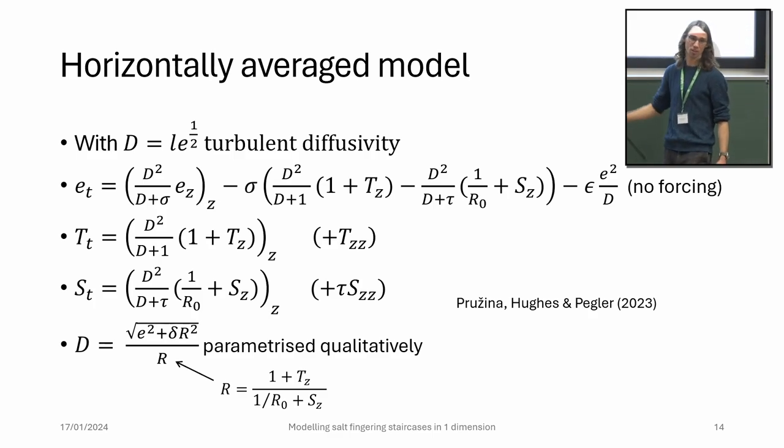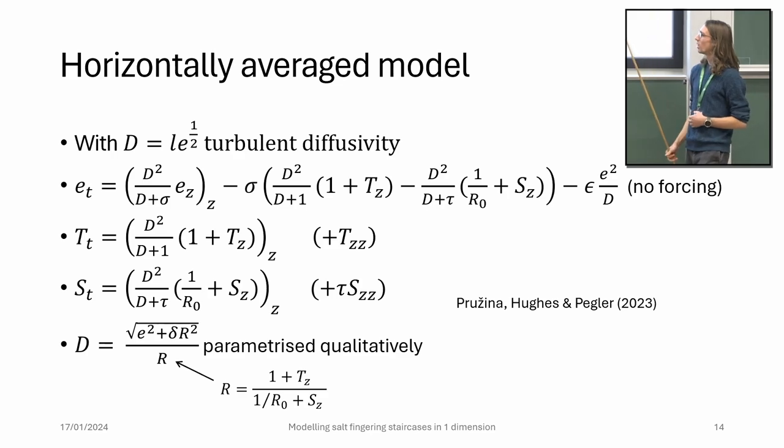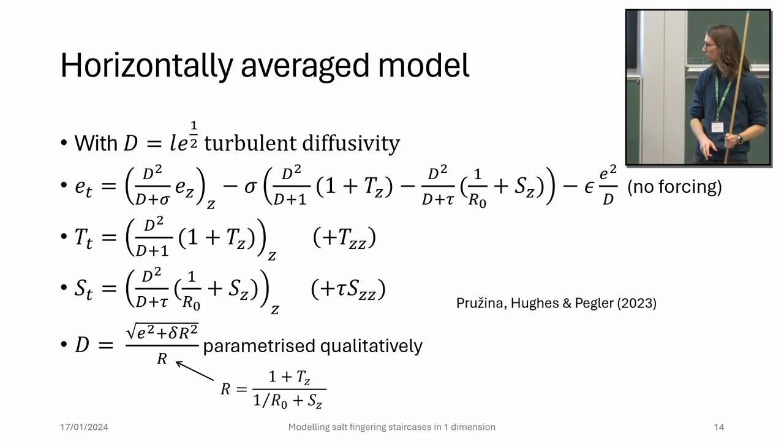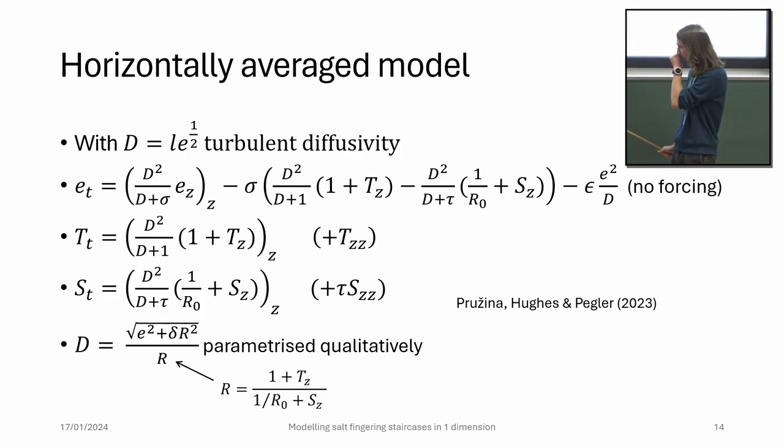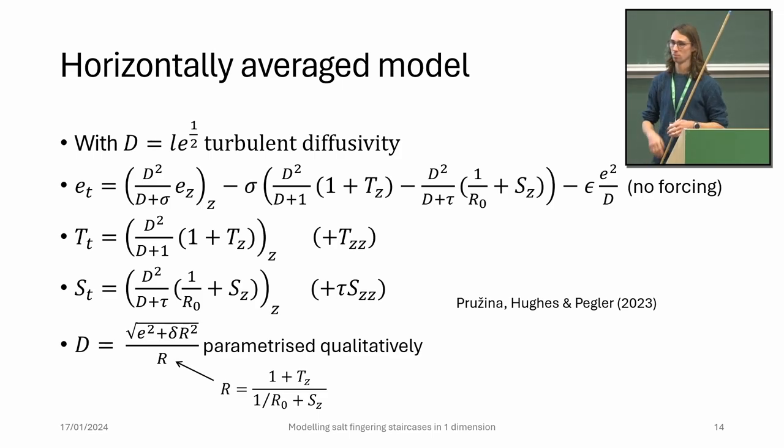Now we've effectively got these turbulent diffusivities, but in each equation they're modified by the molecular diffusivities. This modification is what makes the temperature and salinity fluxes different, which allows our gamma instability to come in. The last thing is to parametrize this D or equivalently the length scale. This parameterization has been chosen based on qualitative arguments. If the energy is large, there's more turbulent diffusion. If the gradient is large, like in an interface between two layers, we expect less mixing. R being large corresponds to the gradient being small, so D is decreasing with R. This δR² is added just to stop E = 0 being the solution, to make sure the system only comes up with positive energy states.